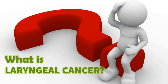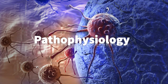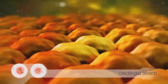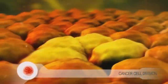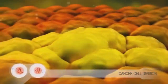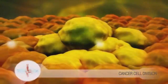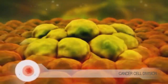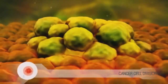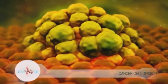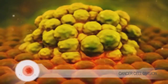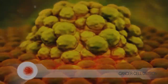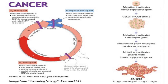Laryngeal cancer pathophysiology: cancer originates in a single cell of the larynx. The cell divides and grows in the organ of origin, causing a localized tumor. A mutation causes cells to divide uncontrollably.